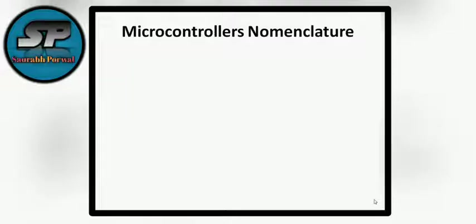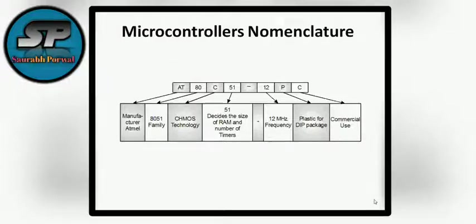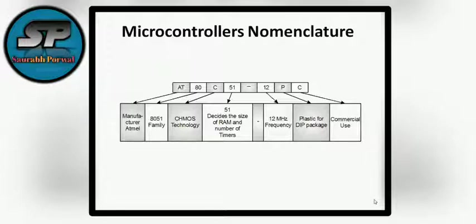Let's talk about nomenclatures. In every IC, there is a name written on it, and that name itself signifies something. The first initial alphabets specify the manufacturer. The next digit specifies the family. The third section — here it is CHMOS, that is Complementary Hybrid MOSFET technology. Since microcontrollers are used for low power consumption, they are implemented using CMOS technology. The next part specifies the particular size of RAM and number of timers. The number 12 stands for the maximum operating frequency. P stands for plastic DIP package. C stands for commercial use. There are many ICs which are not available commercially — in that case, M is written, indicating military grade and not commercially available.